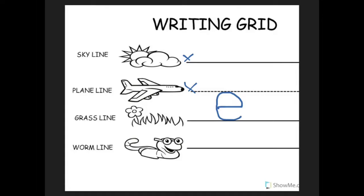E and F. F is a skyline letter. Put your pencil on the skyline, fly backwards, pull straight down to the grass line, put your pencil on the plain line and fly forward for a little bar. F, fun, f.